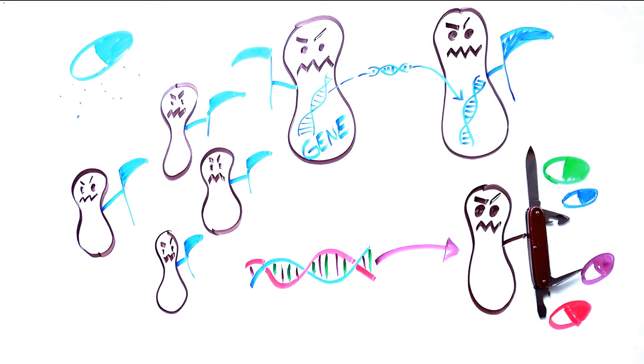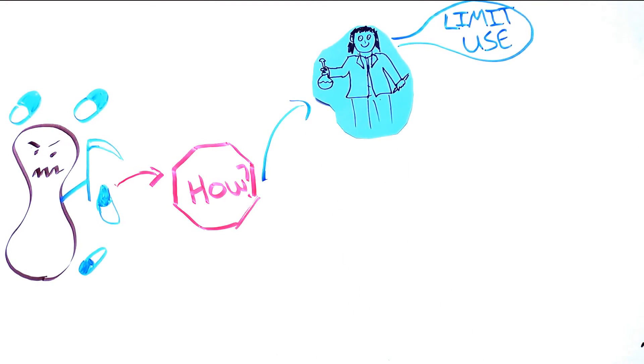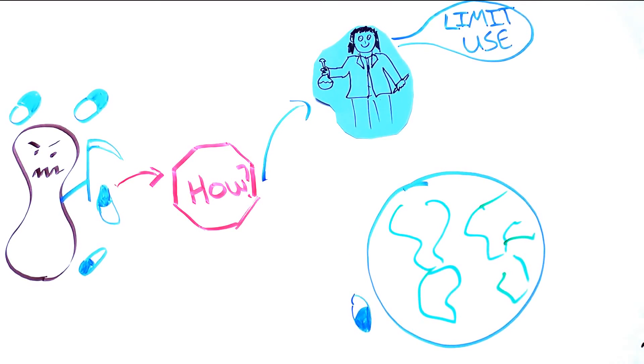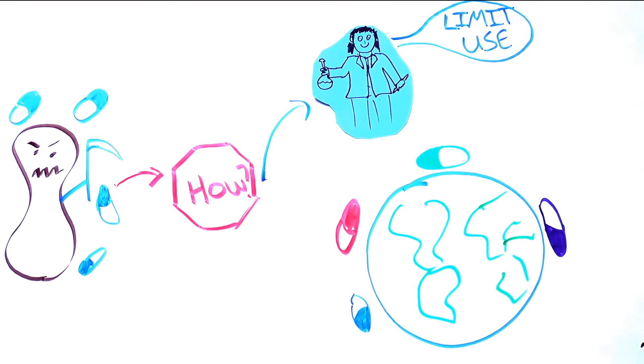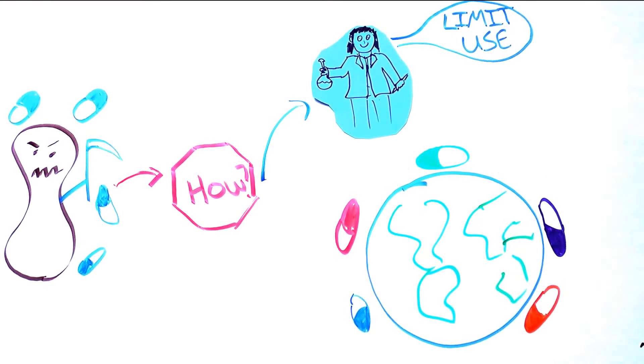Understanding that the more bacteria are exposed to antibiotics the faster they develop resistance helped scientists recommend limiting the use of antibiotics when possible to prevent this. However, antibiotics are still widely used with very little oversight. And today, antibiotic resistance is everywhere.